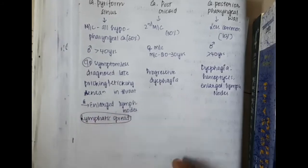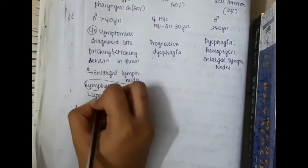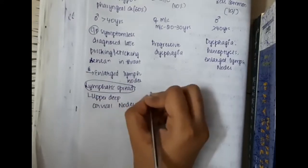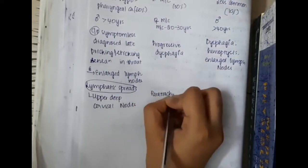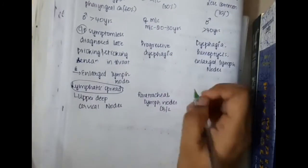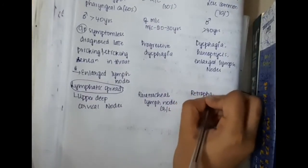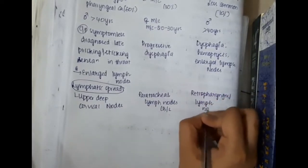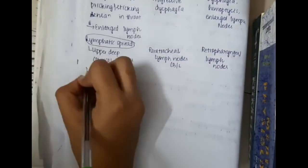Then lymphatic spread. Carcinoma hypopharyngeal spreads to upper deep cervical lymph nodes. Carcinoma post cricoid spreads to paratracheal lymph nodes bilaterally, whereas carcinoma posterior pharyngeal wall spreads to retropharyngeal lymph nodes.